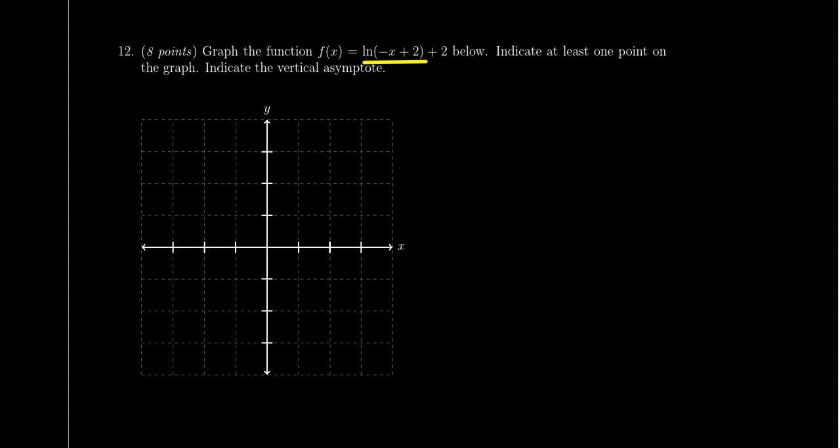We have to put at least one point, label one point, and we have to also label the vertical asymptote. So the thing to remember for logarithmic graphs is that the general formula is the following: f(x) is going to equal the natural log of (x minus h) over b plus k.